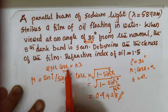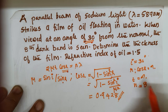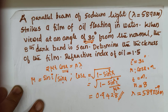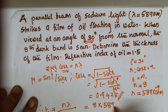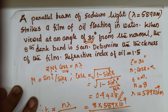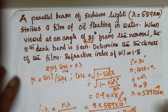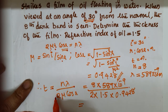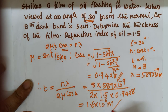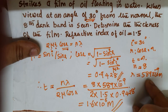With cos r known, and n equal to 8 (8th dark band), lambda equal to 589×10⁻⁹ meter, and mu equal to 1.5, we find t equal to n lambda divided by (2 mu cos r): that is 8 into 589×10⁻⁹ divided by (2 into 1.5 into 0.9428). This gives the thickness t equal to 1.6×10⁻⁶ meter.